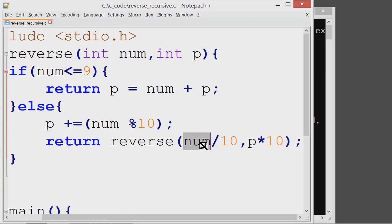So here, if the input is 234, here num divided by 10, that is 23, the result, and p multiplied 10, that is 40, is passed. And it will call again itself with these two numbers.